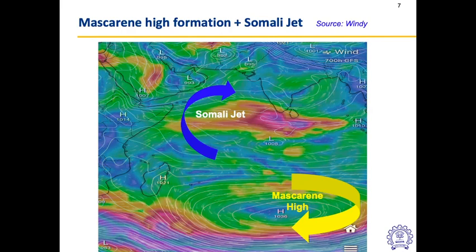So far we have covered three crucial factors: Tibetan plateau heating and ITCZ movement, and the Mascarene High and Somali jet formation. This will be part one of the video, and part two will cover the remaining topics including EICC, Indian Ocean Dipole, and El Niño dynamics.